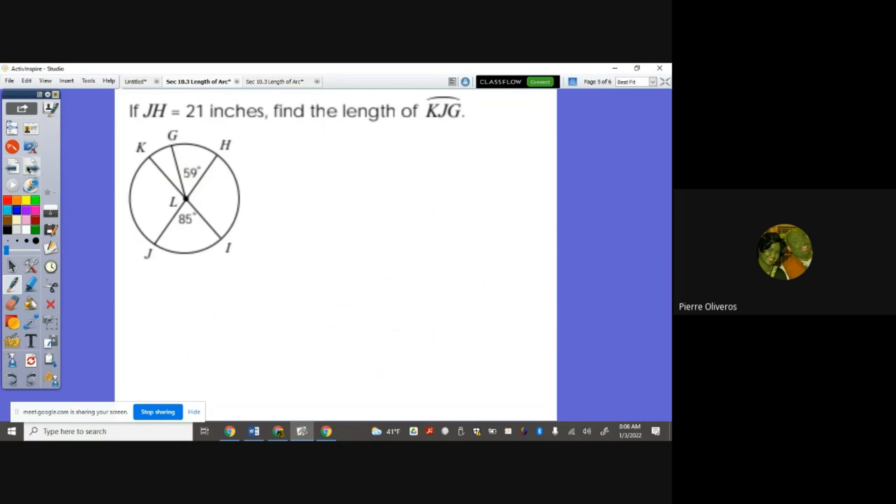If JH is 21 inches, JH is the entire thing. So therefore the radius is 10.5 inches because that's the diameter. Find the length of arc KJG. You cannot do K, J, G and then G back again here. That's wrong.